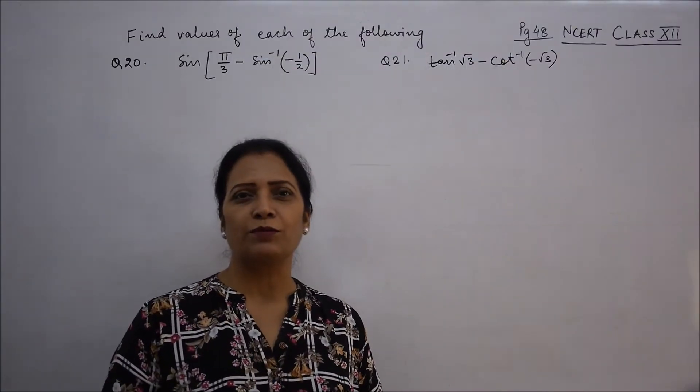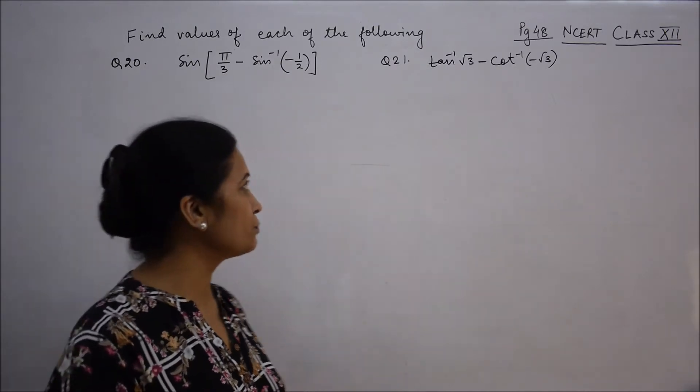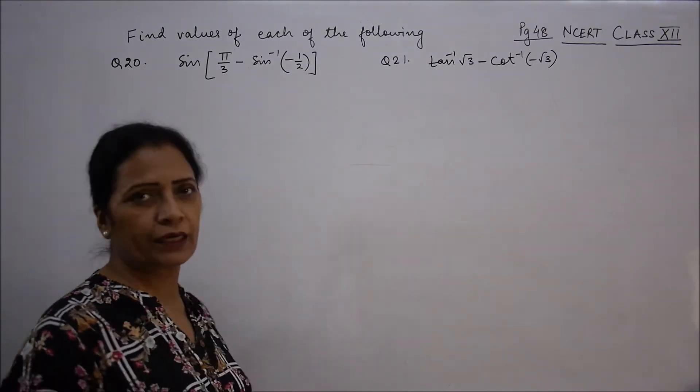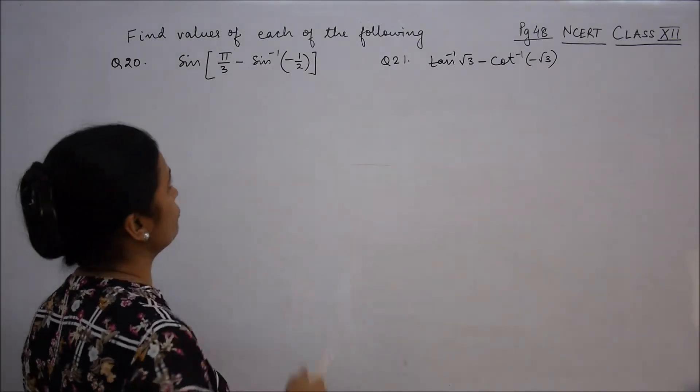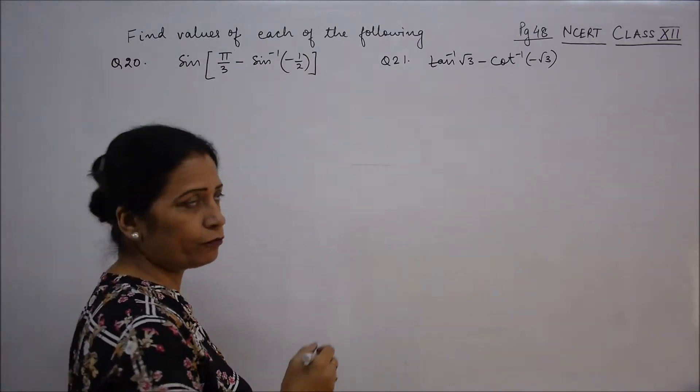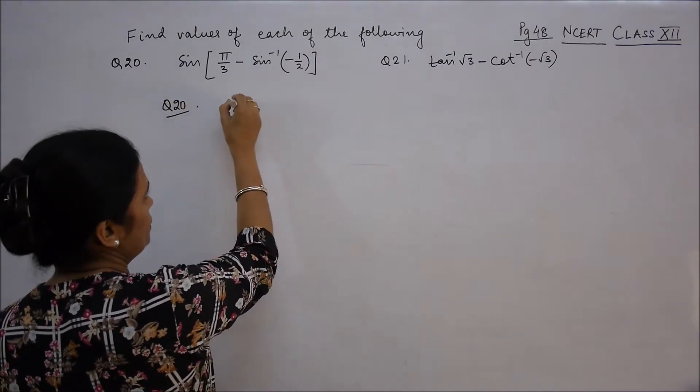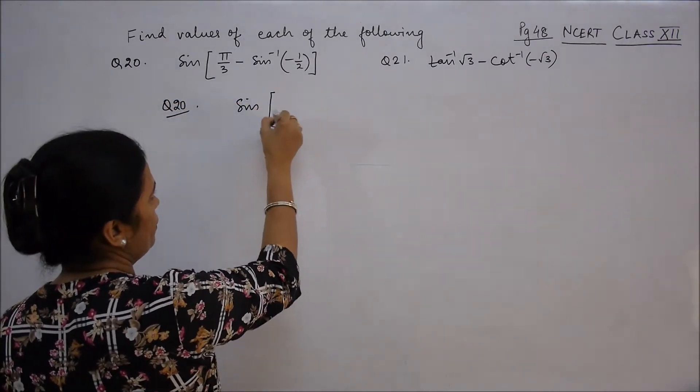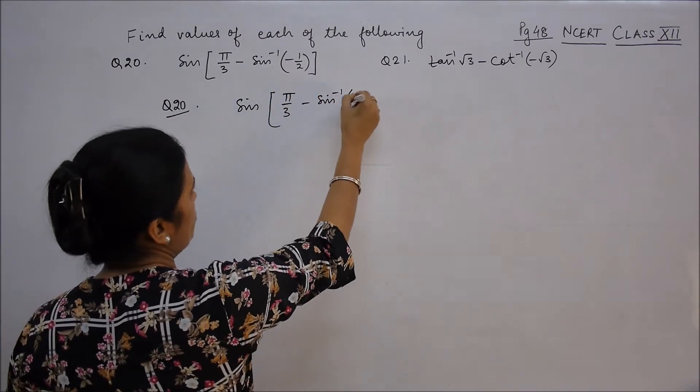Hello dear students, do the next questions from the topic inverse trigonometric functions. We will cover questions number 20 and 21. Start from question 20. Find values of each of the following. Question 20 is sin(5π/3 - sin inverse(-1/2)).